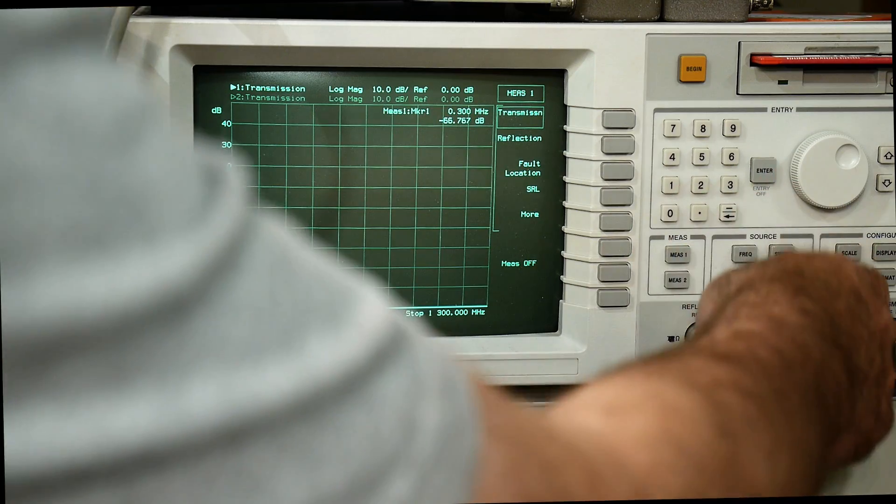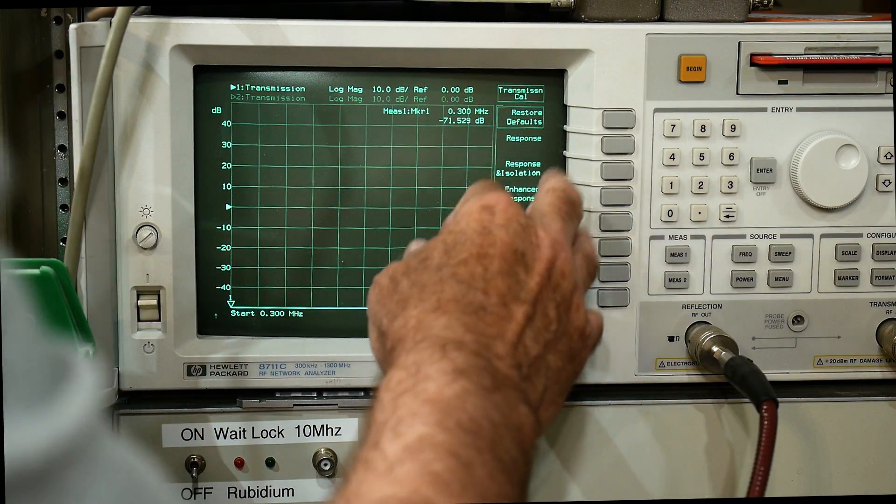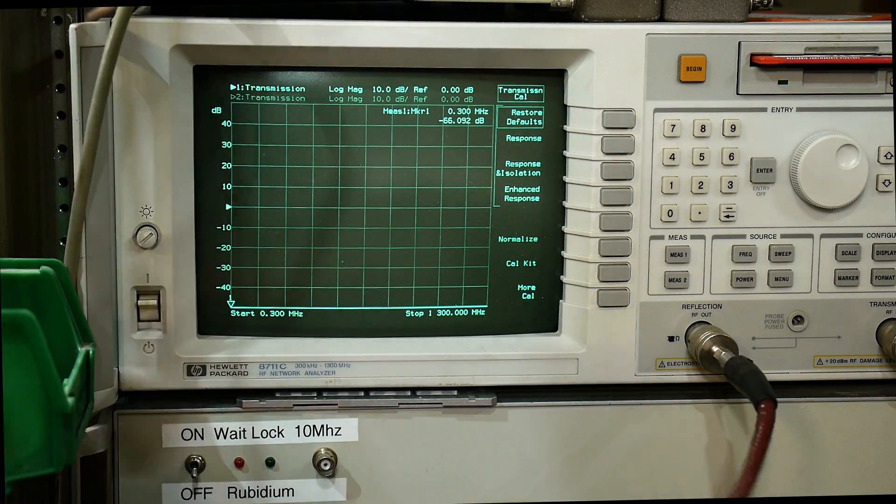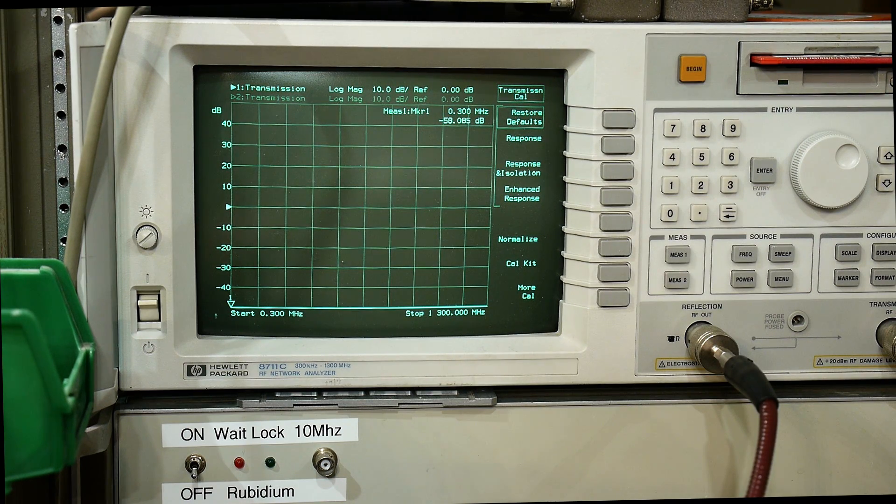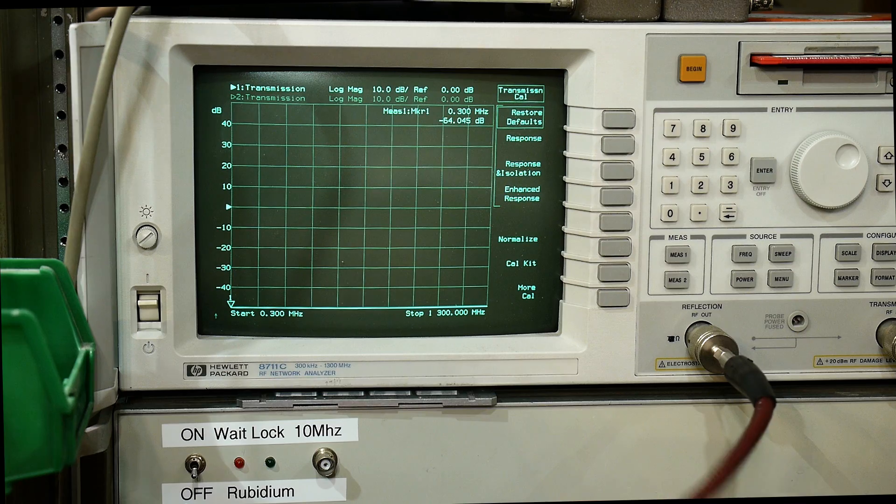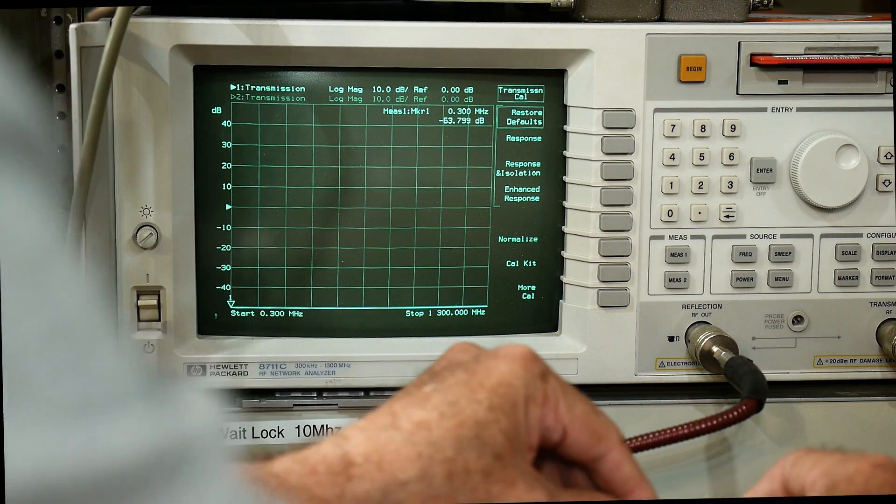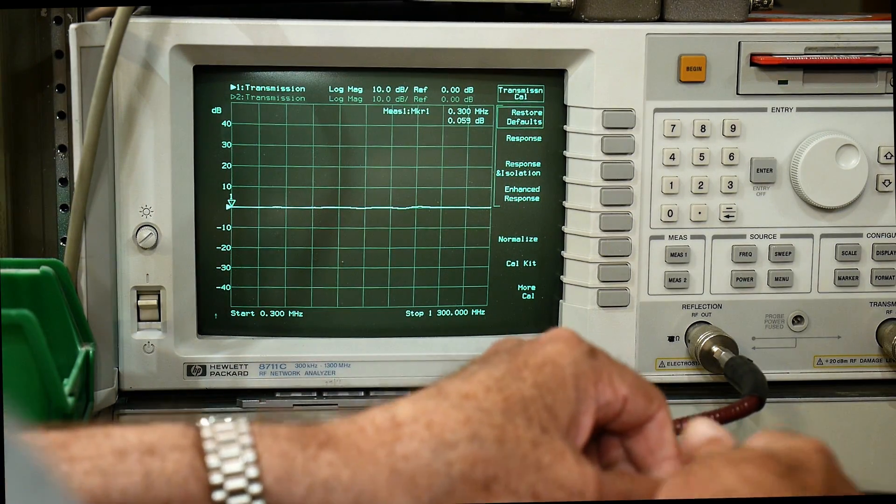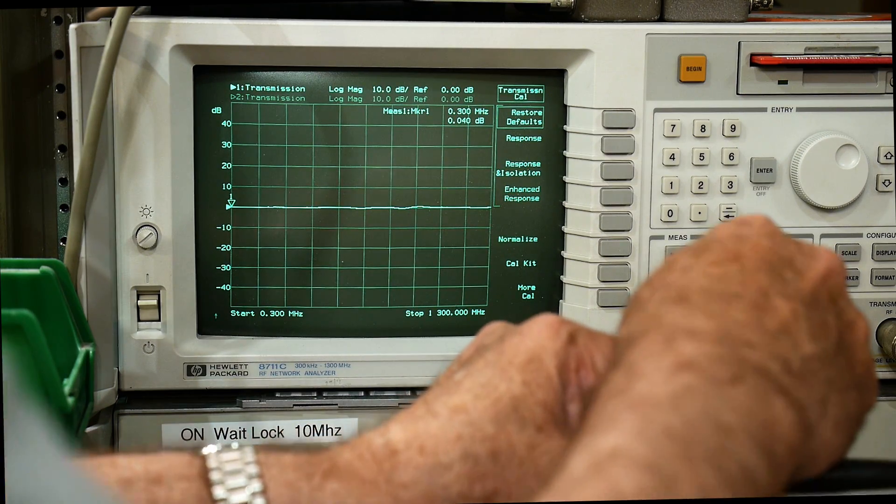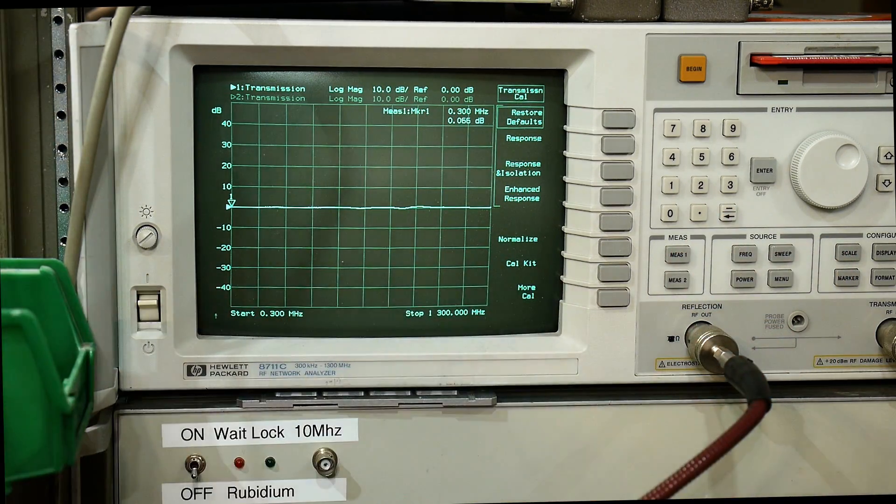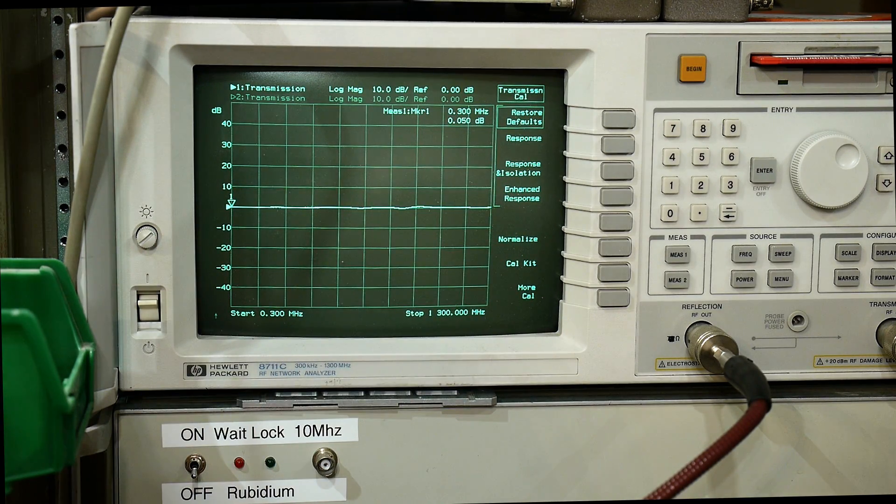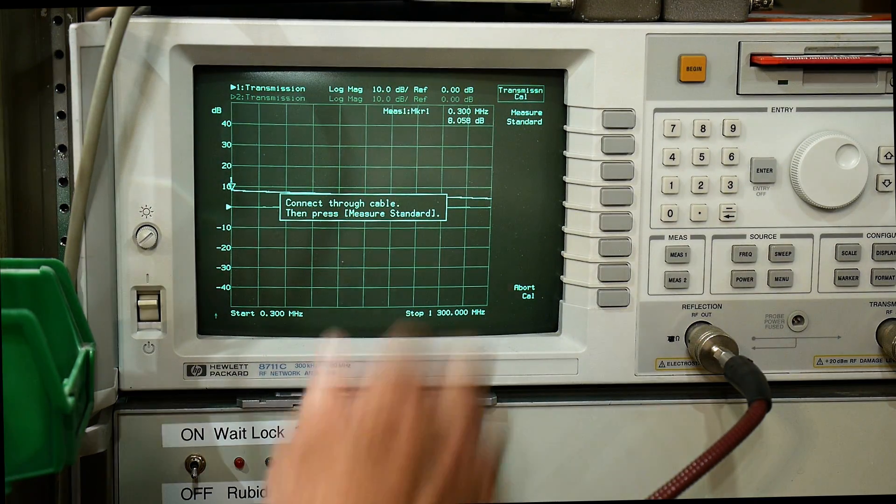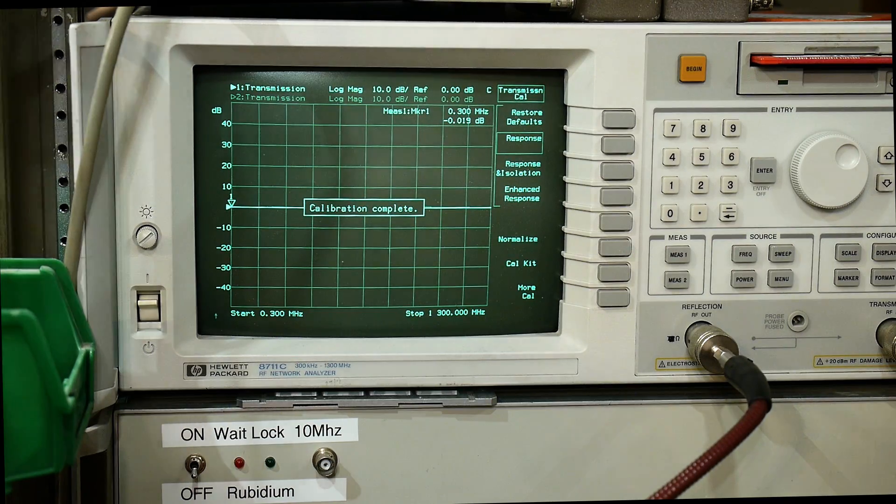Let's do that. We will go back to cal, and we need to put a through. We need to connect the input and output together, so we'll do that, and make sure I've got these tight with my wrench here. You see it's already pretty good, but we will do a cal through. And boom, there we go, now we have a perfect through cal.